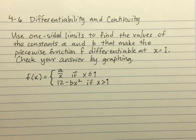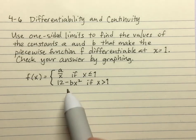Hey everyone, we are looking at differentiability and continuity, specifically one type of problem. Namely, we are going to use one-sided limits to find the values of the constants a and b that make the piecewise function f differentiable at x equals 1. And then we'll check things by graphing.